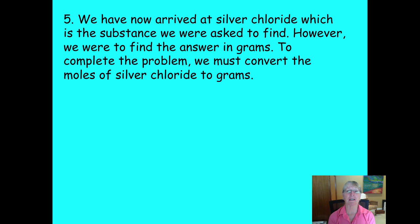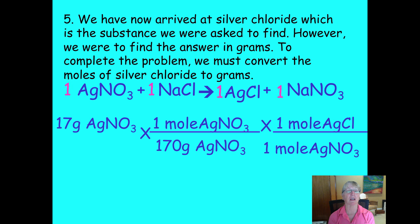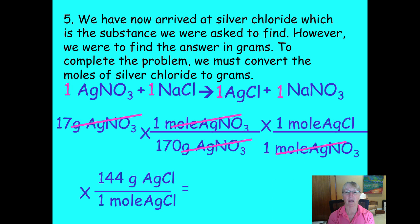Now we have the moles of silver chloride, but what if the problem wanted grams? You have the same type of problem: change grams of silver nitrate into moles, then change moles of silver nitrate into moles of silver chloride using the one-to-one ratio, and finally multiply moles of silver chloride by its molar mass — 144 g/mol from the periodic table. Everything cancels: grams of silver nitrate, moles of silver nitrate, and moles of silver chloride all cancel, giving you grams of silver chloride. The answer is 17 ÷ 170 × 144 g/mol of silver chloride.